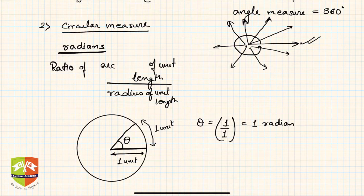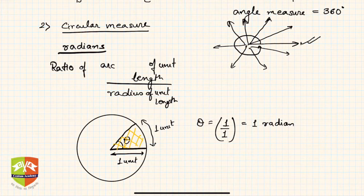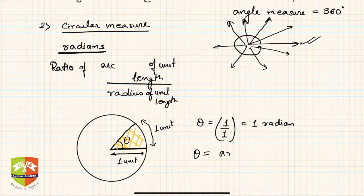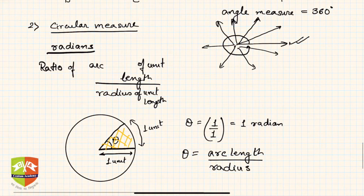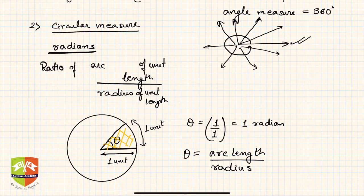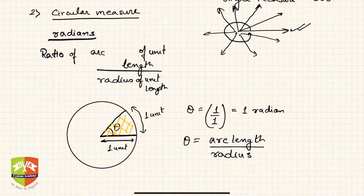In a sector of a circle, the central angle is equal to the arc length divided by the radius. This is another way of measuring angles. We will be studying radians a great deal in higher grades.